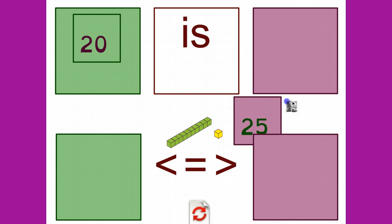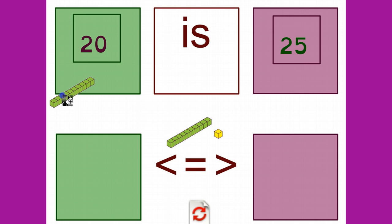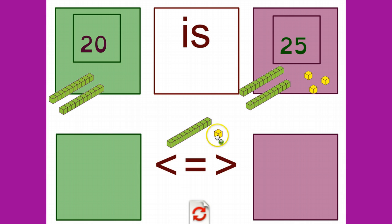20 compared to 25. Build my numbers. 20 is 2 tens and no ones, and 25 is 2 tens, and 1, 2, 3, 4, 5 ones.